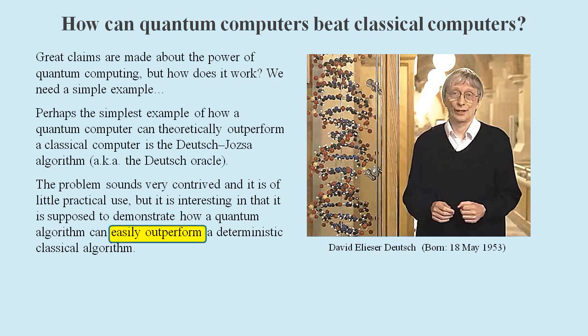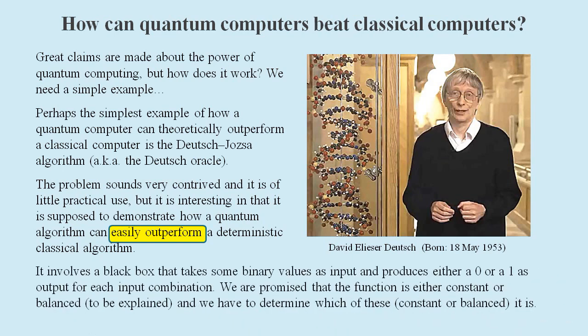And particularly if it demonstrates how a quantum algorithm can easily outperform a deterministic classical algorithm. It involves a black box that takes some binary values as inputs and produces either a zero or a one as output for each input combination. The task for the quantum computer is to determine if the black box function is constant or balanced. But what does it mean for a function to be constant or balanced?